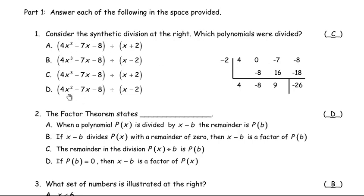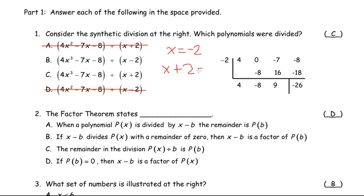Notice that answers a and d are 4x squared, not 4x cubed, so we can cross those off right away. Both remaining options have 4x cubed minus 7x minus 8. Now, what did we divide it by? The negative two in the synthetic division is the restriction, and when you bring it over and set it equal to zero, the sign changes — negative two becomes positive — so the divisor factor is x plus 2. Therefore, c is the correct answer for number one.